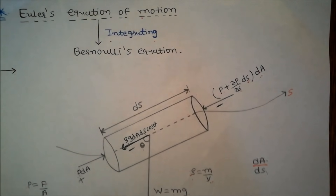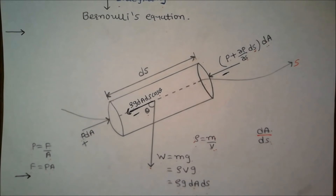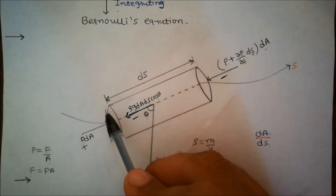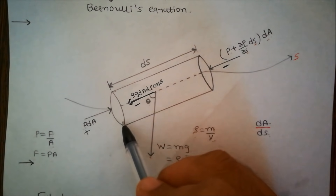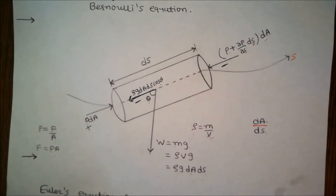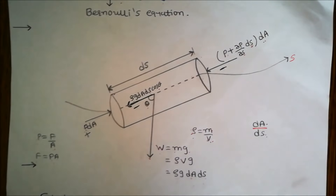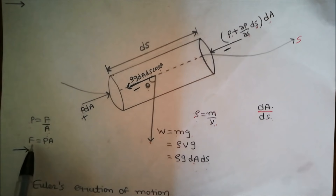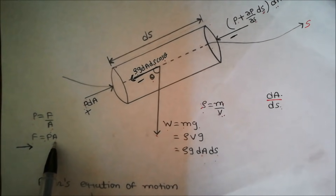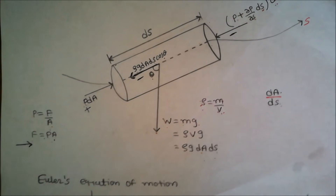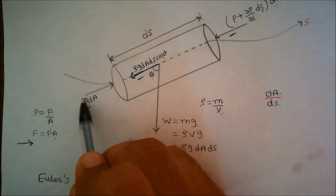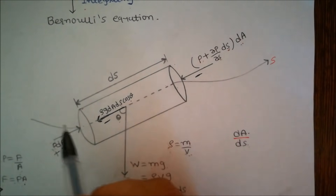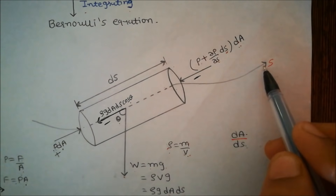First, we consider one fluid element with area dA and length dS. On one side, pressure P is acting. Pressure is equal to force per unit area, so the pressure force is P times dA. This pressure force acts in the direction of fluid motion.